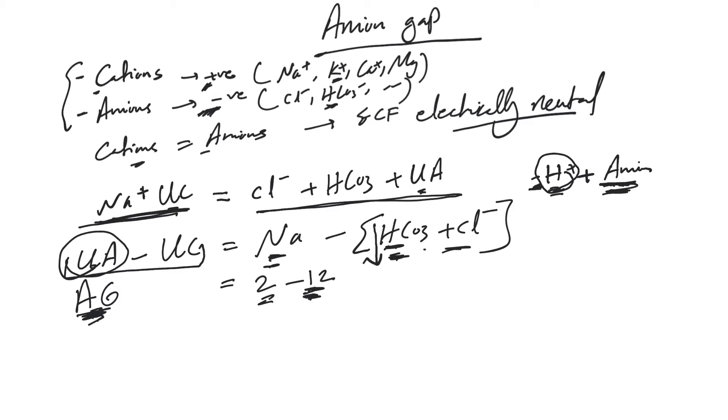That way the equation will remain true and the anion gap will go up. Of course, anion gap increases only when there is production of acids, so it's only important when you think about metabolic acidosis. Anion gap should not change with pure metabolic alkalosis or other acid-base disturbances.